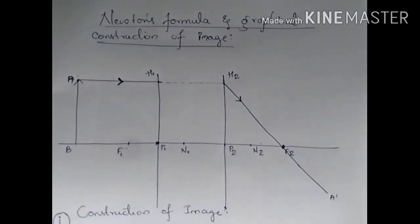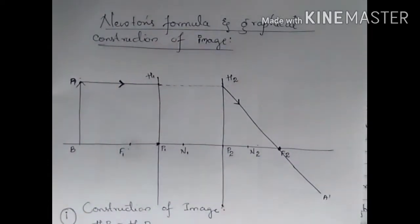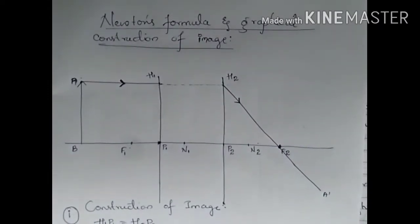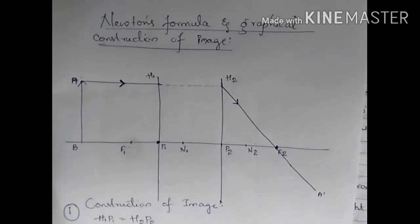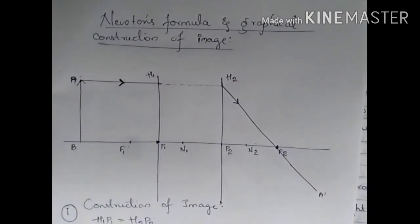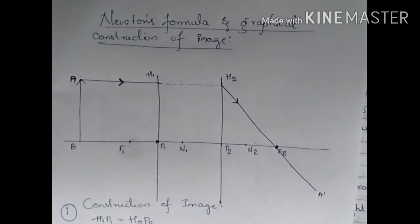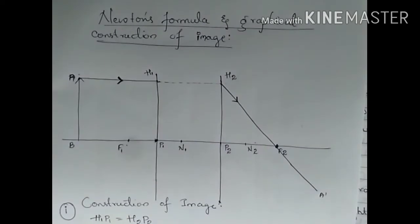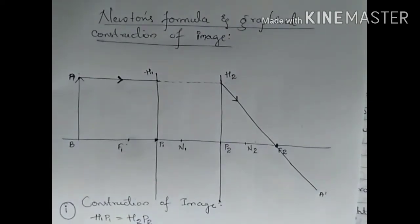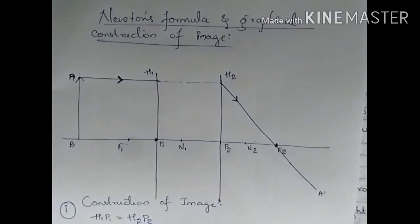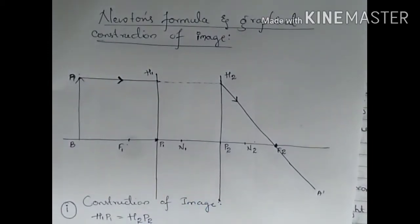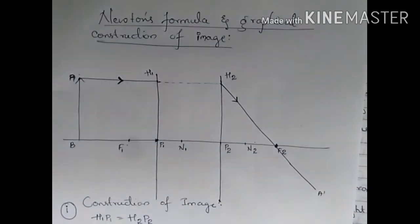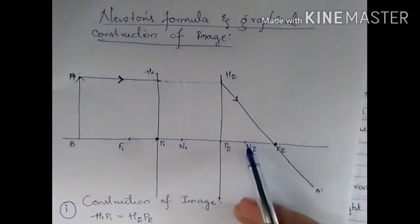Last class we left our discussion on how to construct the image for an object placed on the principal axis. We discussed the first point, so now let us discuss the second point. You have to draw another ray coming from A that passes through the first focal point F1. This ray, touching the first principal plane K1, will emerge out from K2 on the second principal plane, parallel to the principal axis.